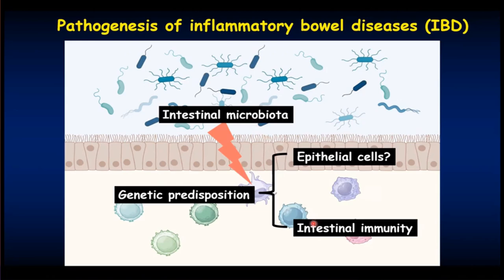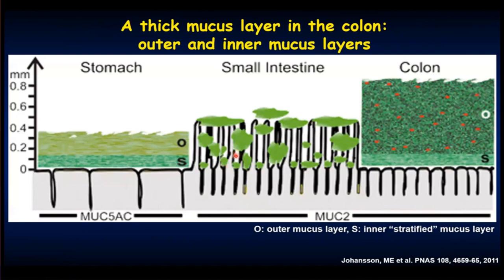Epithelial cells in the gastrointestinal tract are covered by mucus layers. Compared with the epithelial cells in the stomach and small intestine, epithelial cells in the colon are covered by very thick mucus layers that are composed of the outer mucus layers and inner mucus layers.